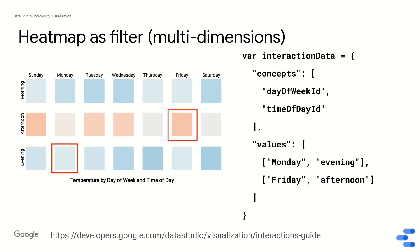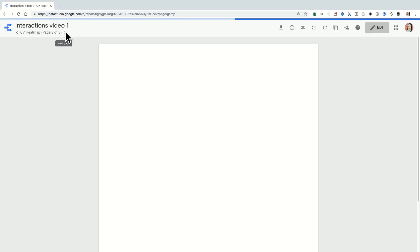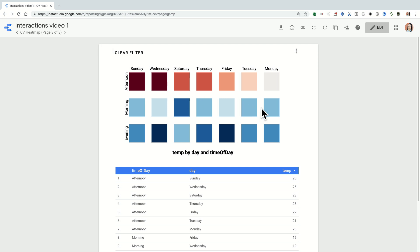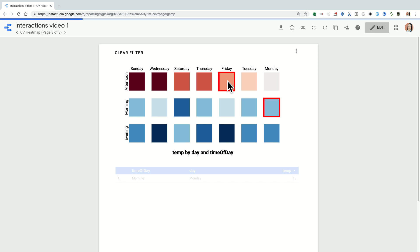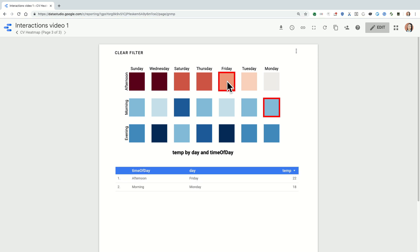What about a more complicated filter interaction? Here I have a heat map with two dimensions and one metric: day of week and time of day. I've clicked on Friday afternoon and Monday evening. My concepts array contains day_of_week_ID and time_of_day_ID. The values array has a first sub-array corresponding to Monday evening, and a second sub-array corresponding to Friday afternoon. This is the object I send to Data Studio to apply a filter across both selected cells.